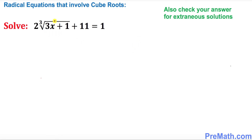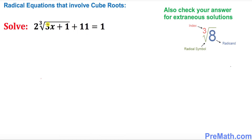Before we solve this cube root equation, our index is 3. If you are not sure what an index is, I have put down the body parts of a radical — this small number on the left hand side is the index.